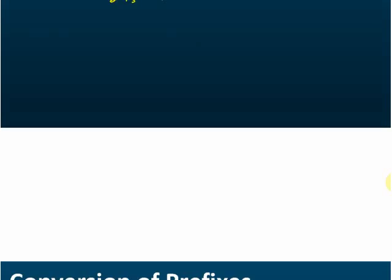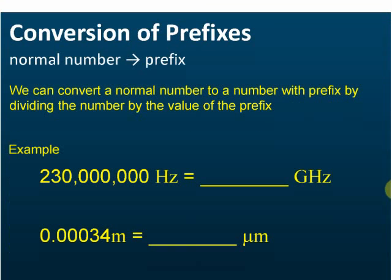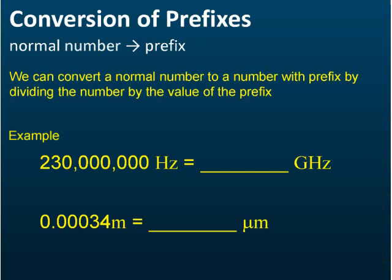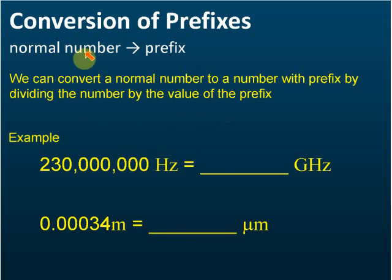We can convert a normal number to a prefix by dividing the number by the value of the prefix. Previously, prefix to normal number we multiply by the value of the prefix — so prefix to normal number is the inverse. For normal number to prefix, we divide.